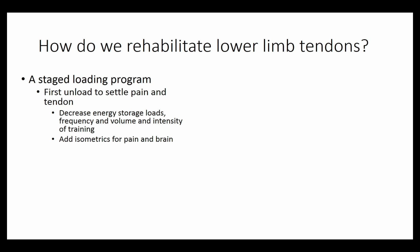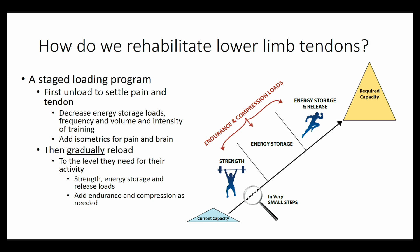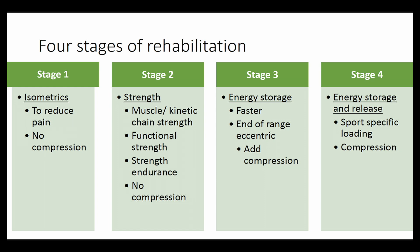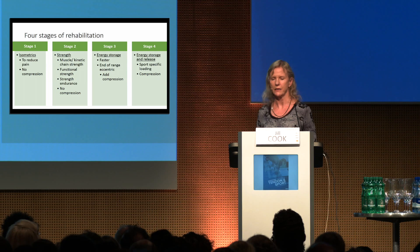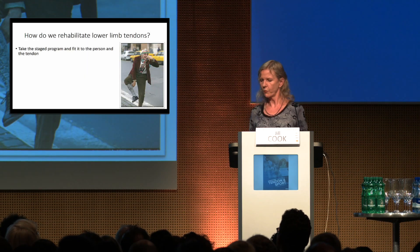How do we do it? We do a stage-loading program. First, we reduce loads to let the tendon settle down, then we gradually reload. In very small steps we go through a strength, energy storage, and energy storage-release program back to the required capacity, adding endurance and compression loads at the same time. Our four stages are: stage one — isometrics to reduce pain, outside of compression; stage two — strength, including muscle and kinetic chain strength, functional strength and strength endurance without compression; stage three — restoring faster programs, adding end-of-range eccentric loading and starting to add compression; and stage four — sports-specific loading where we need to add compressive loads.